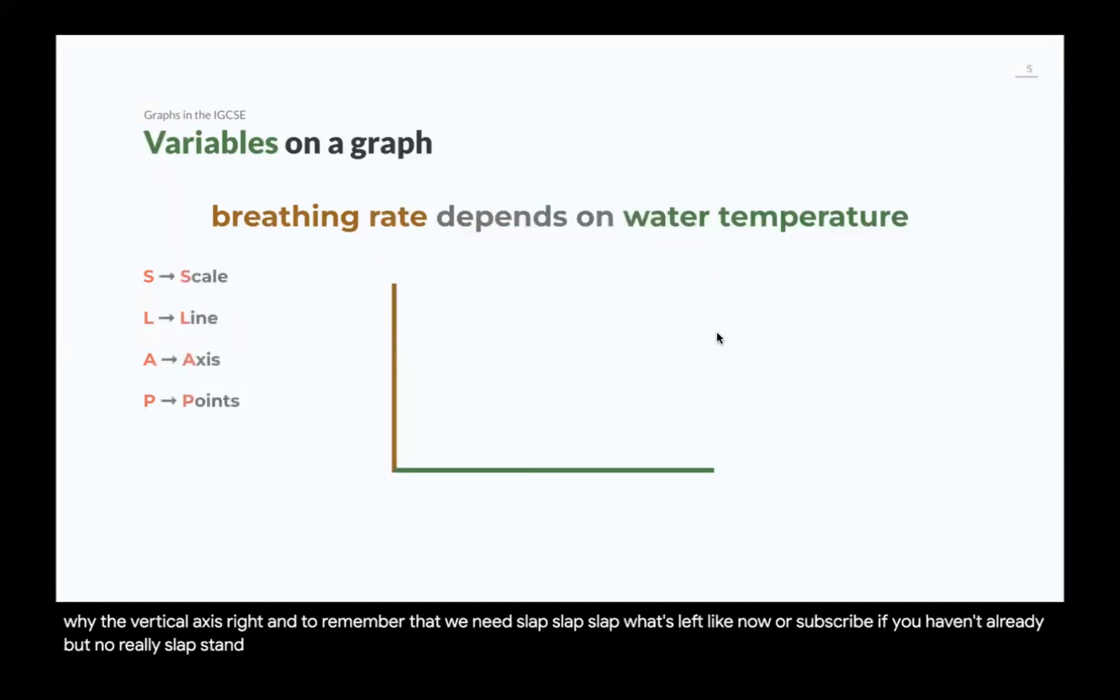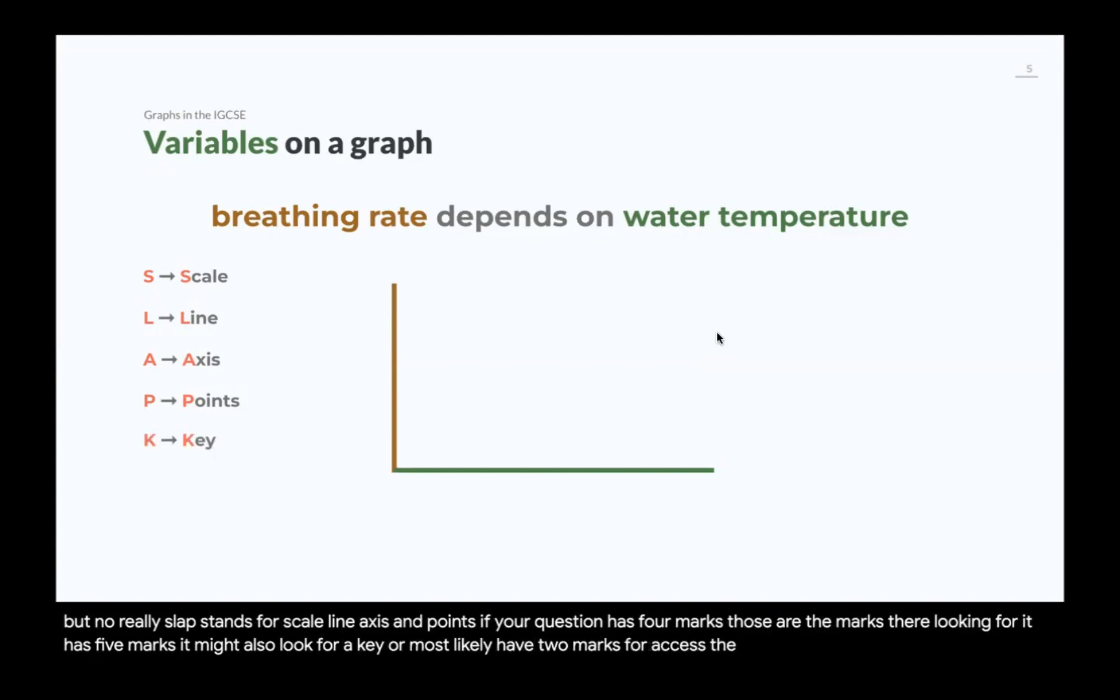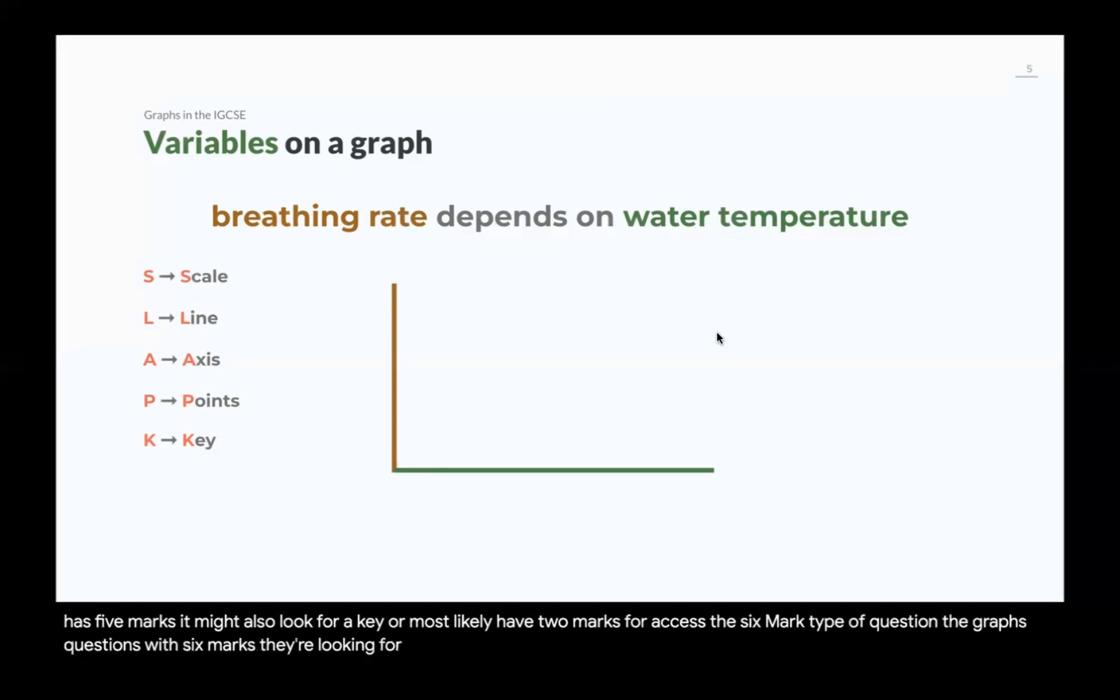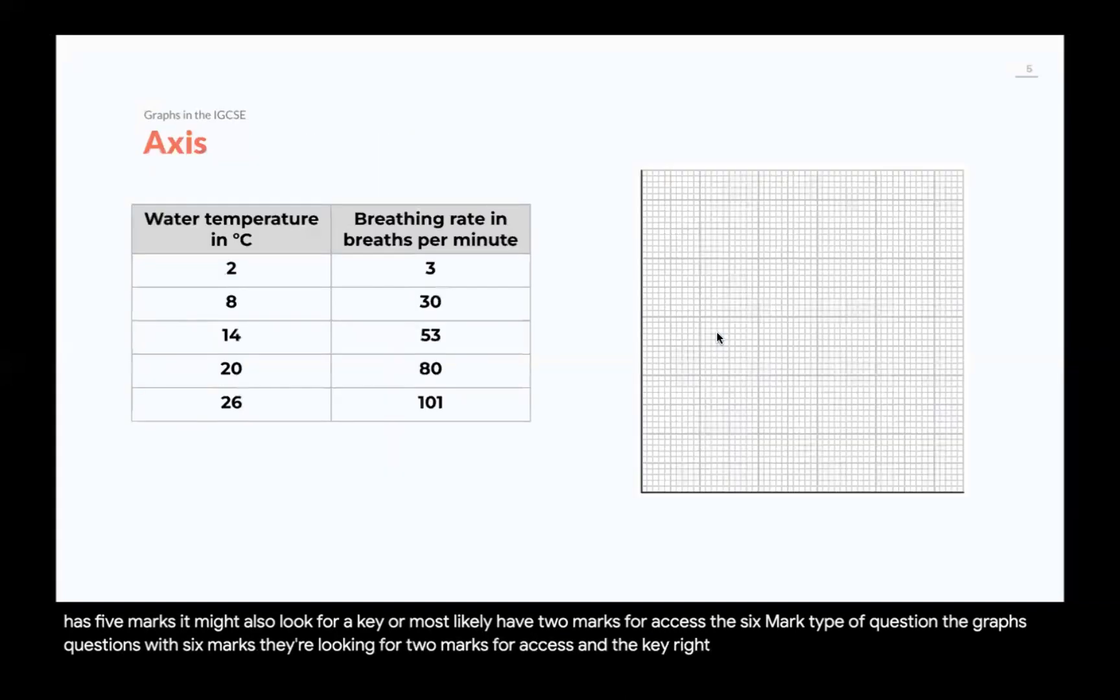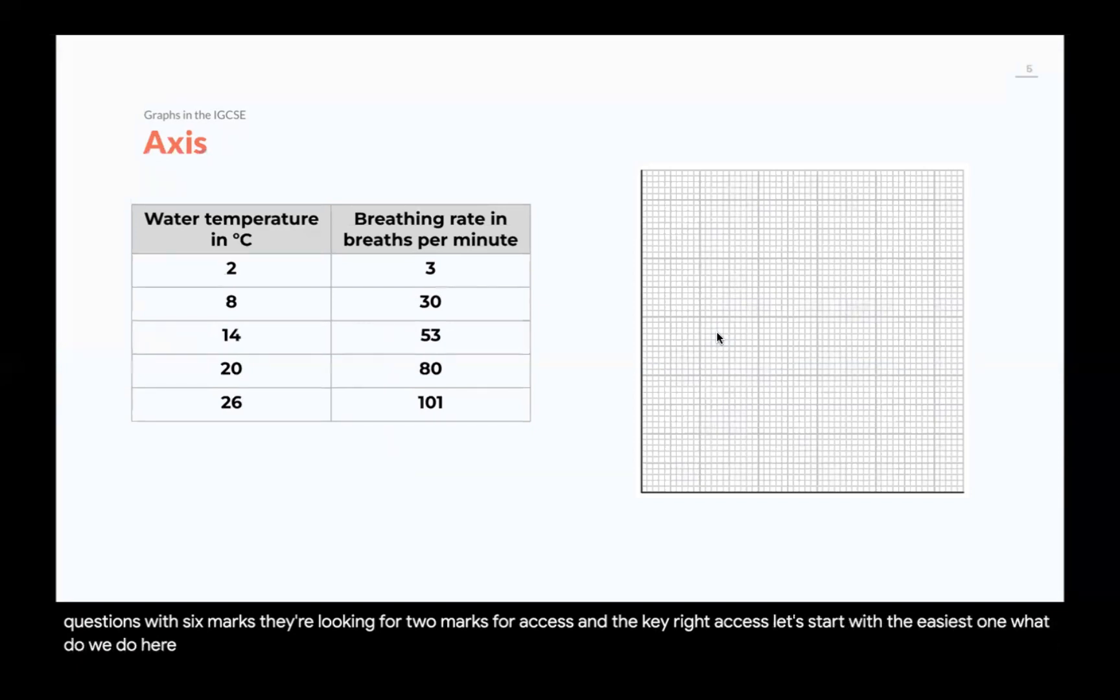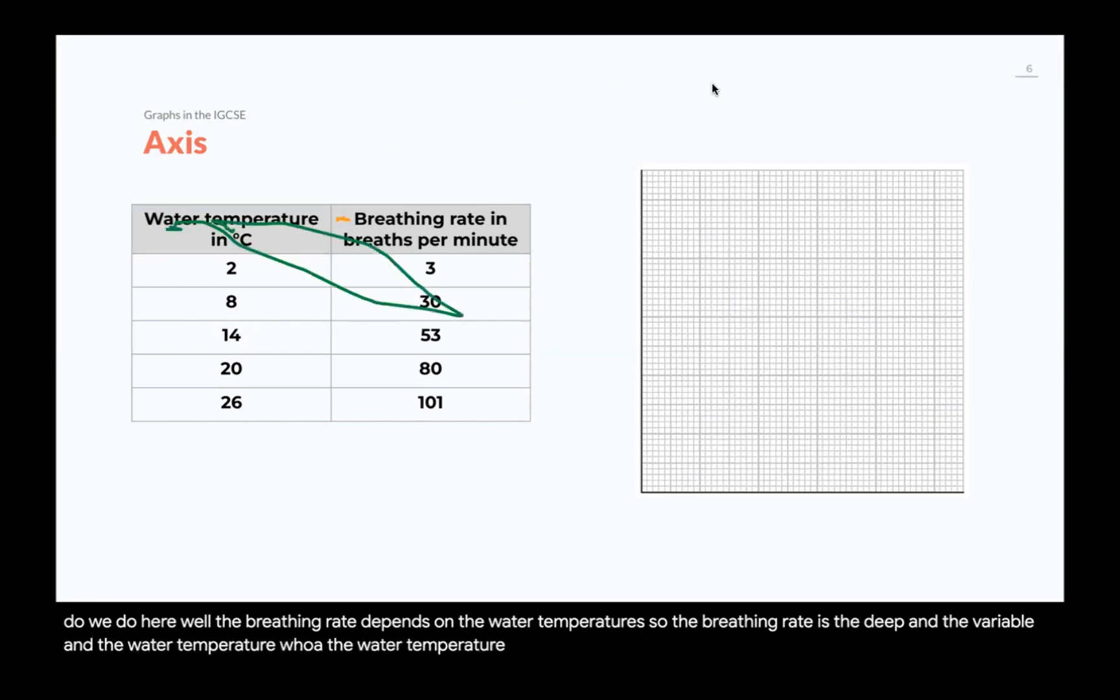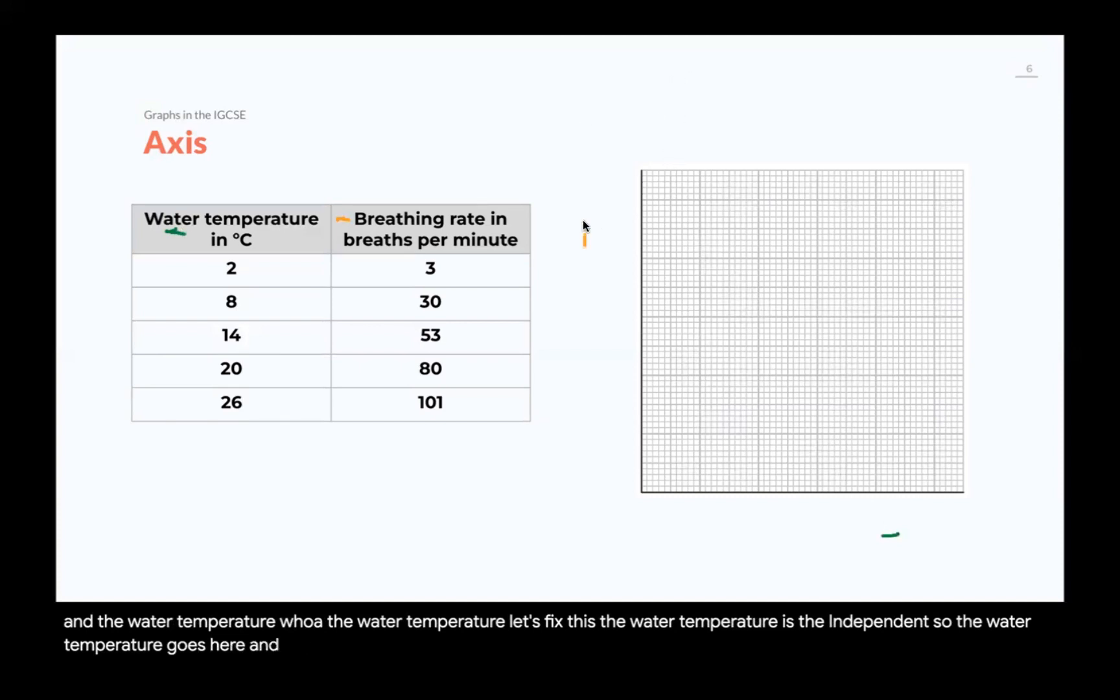But really, slap stands for scale, line, axis, and points. If your question has four marks, those are the marks they're looking for. If it has five marks, it might also look for a key, or most likely have two marks for axis. The six-mark type of question, the graphs questions with six marks, they're looking for two marks for axis and the key. Axis, let's start with the easiest one. What do we do here? The breathing rate depends on the water temperature. So, the breathing rate is the dependent variable, and the water temperature is the independent. So, the water temperature goes here, and the breathing rate goes there.